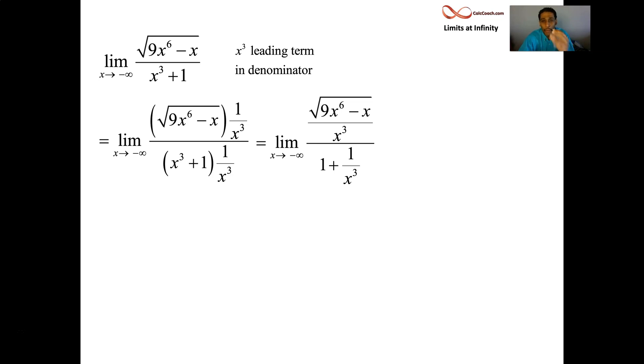So I want to write x cubed as the root of x to the sixth, which would be good, right? But you can't. So we're going to have to enforce the fact that the x cubed is headed to a negative number by putting the negative root. This only happens when you have this lethal combination of x headed towards negative infinity and your leading power in the denominator being odd.